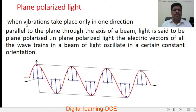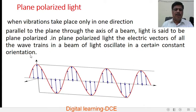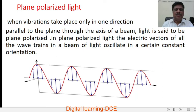What is plane polarized light? When vibrations take place only in one direction, parallel to the plane through the axis of the beam, light is said to be plane polarized. The electric vectors of all the wave trains in a beam of light oscillate in a certain constant orientation — that is, vibrations occur in only one plane or one direction, say along the y direction only. Therefore it is called plane polarized light, and also linearly polarized light.